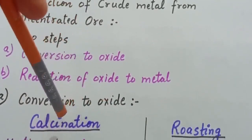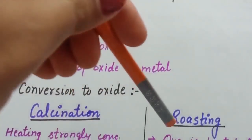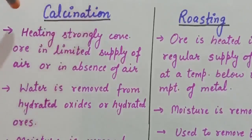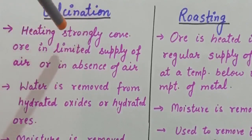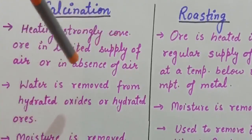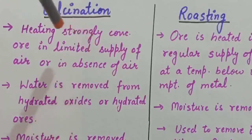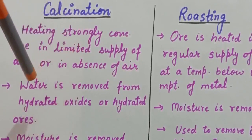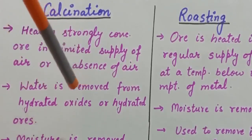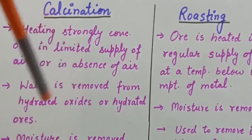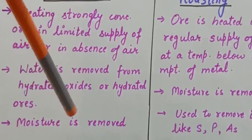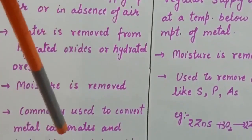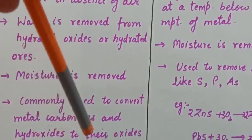For conversion of concentrated ore to its oxide, we have two processes: calcination and roasting. Calcination is heating the concentrated ore strongly in limited supply of air or in the absence of air. When we heat, water is removed if we have hydrated oxide or hydrated ores. Moisture is also removed. This method is commonly used to convert metal carbonates and metal hydroxides to their respective oxides.